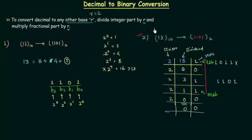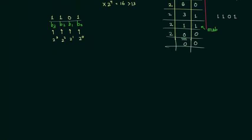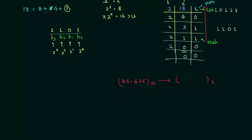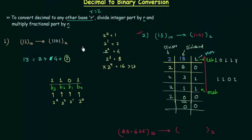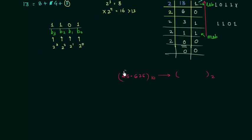This is the most preferred method to convert a decimal number to binary. Now we will consider another example that also has a fractional part. The number is 25.625 in decimal, and we want its binary equivalent. We divide the integer part by 2 and multiply the fractional part by r. In this case the integer part is 25 and the fractional part is 0.625.